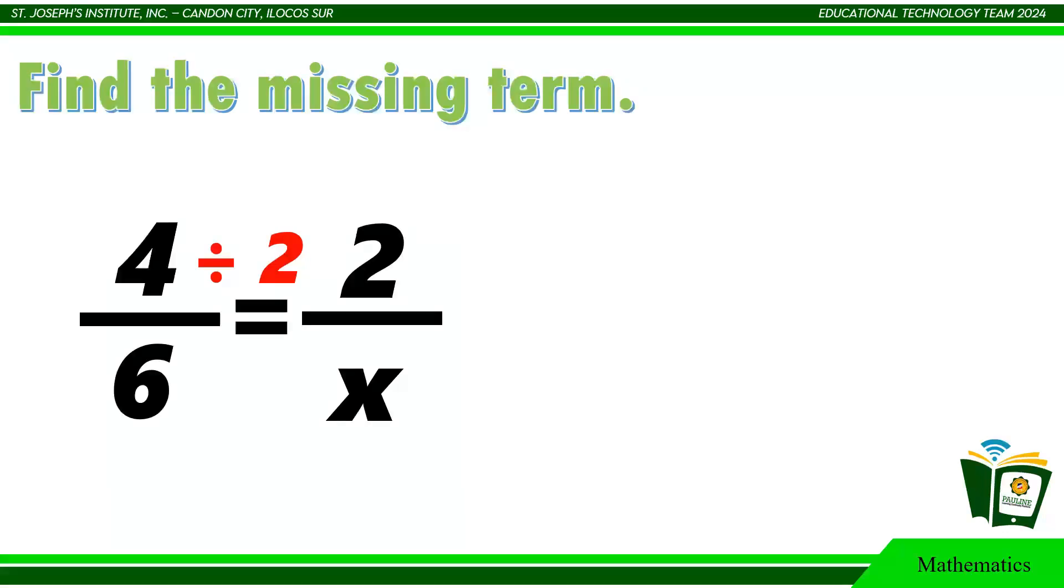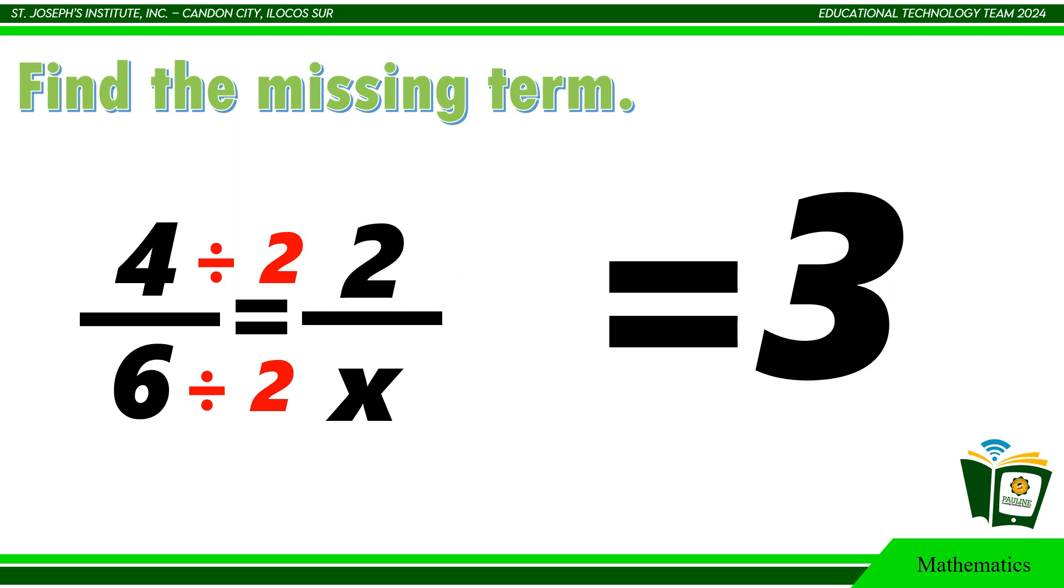So whatever you divide in 1, divide it to the other. 6 divided by 2 equals 3. Therefore, the value of x is 3.